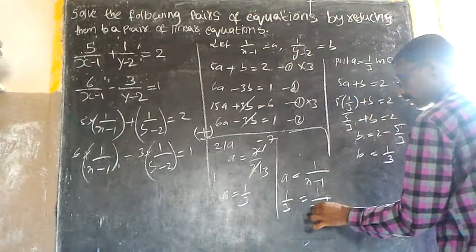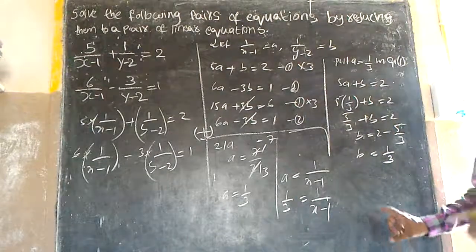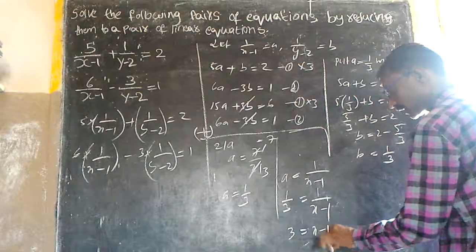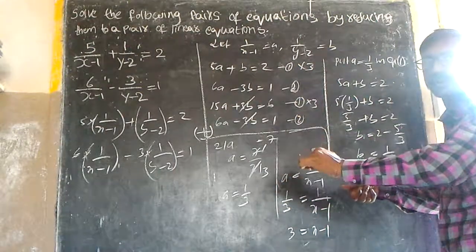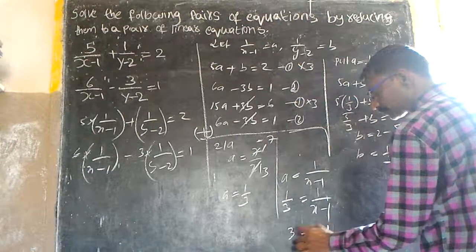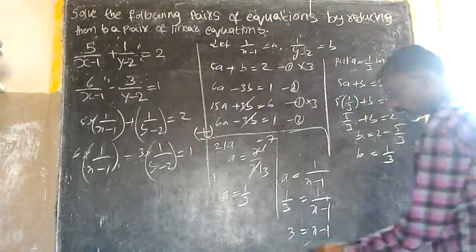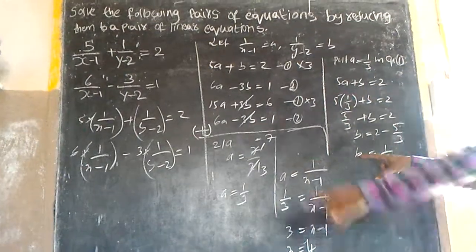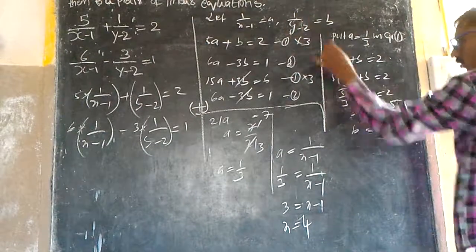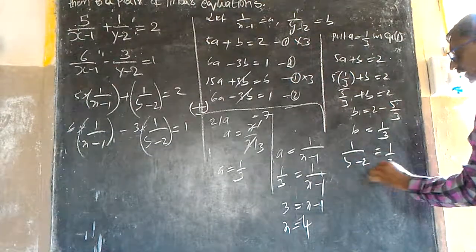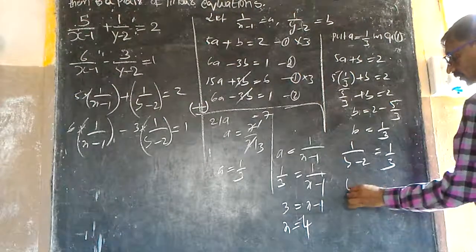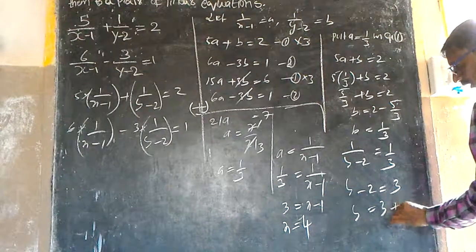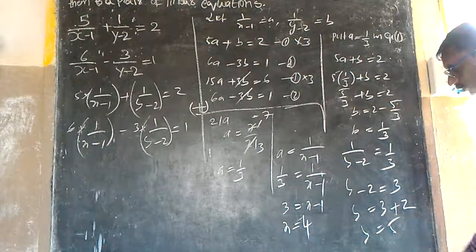Now back-substituting: since a is equal to 1 by 3 and a equals 1 by (x minus 1), we get 1 by (x minus 1) equals 1 by 3. Inverting both sides, x minus 1 equals 3, so x is equal to 4. Similarly, b equals 1 by 3 and b equals 1 by (y minus 2), so y minus 2 equals 3, giving y is equal to 5.